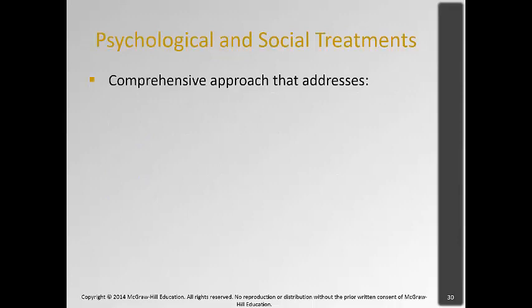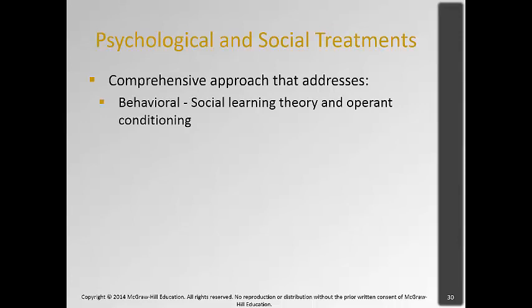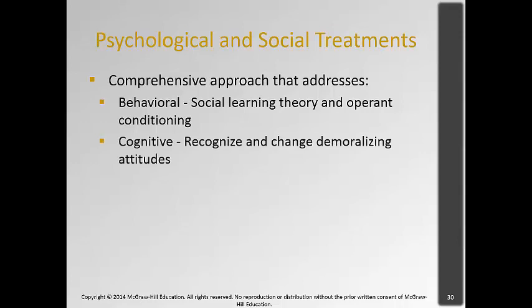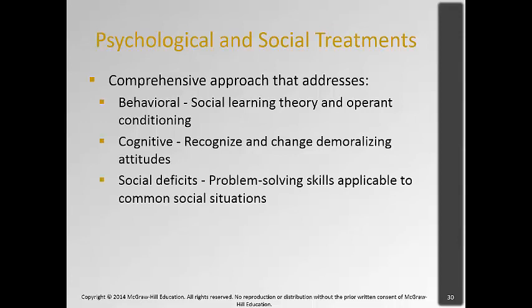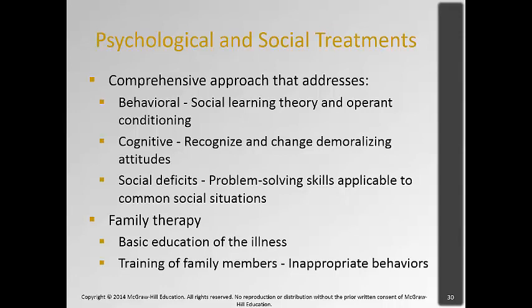Atypical antipsychotics bind to the D4 dopamine receptor and influence several other neurotransmitters like serotonin. These newer medications have fewer side effects but can cause agranulocytosis, so they have to be monitored more carefully. Psychological and social treatments can also be used in conjunction with medication — not instead of medication, since schizophrenia is a biologically based disorder. These include behavioral techniques based on social learning and operant conditioning, cognitive restructuring, problem-solving skills training, and family education about the illness, prognosis, course, and how to decrease stress for the individual.